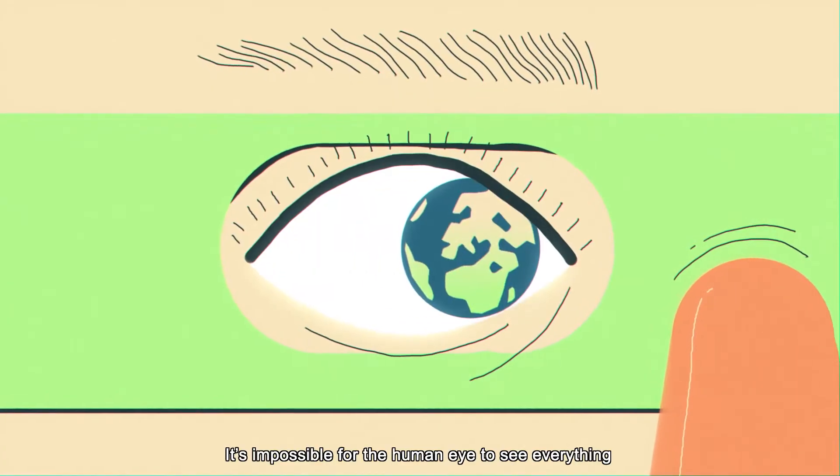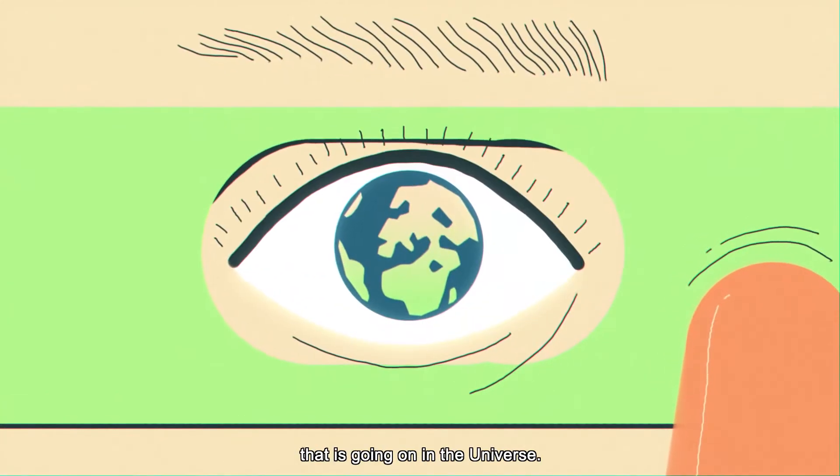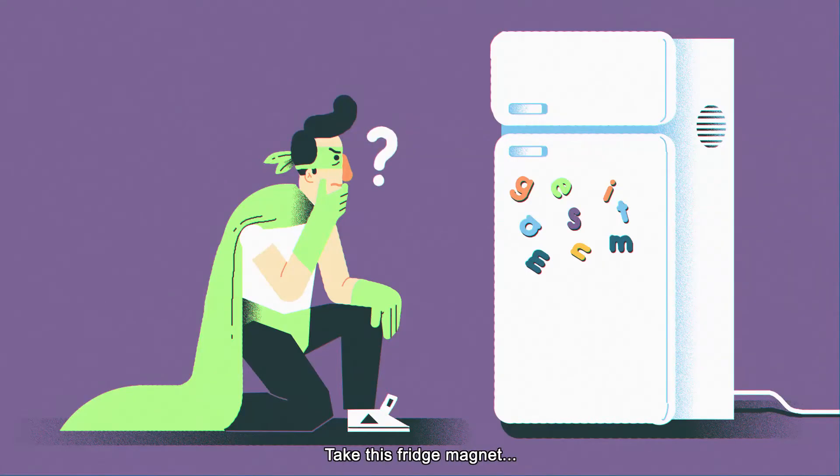It's impossible for the human eye to see everything that is going on in the universe. Take this fridge magnet. How does it stay on the fridge?